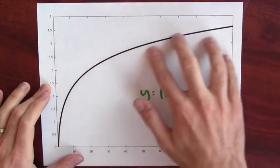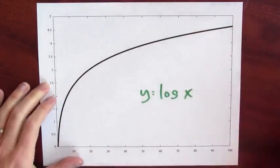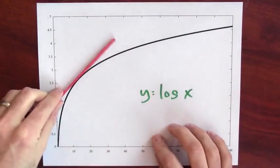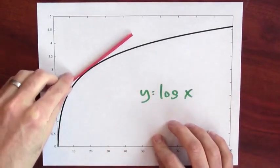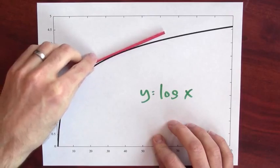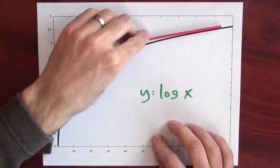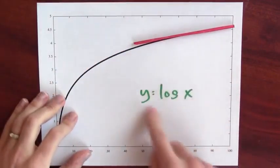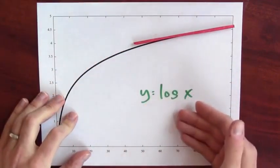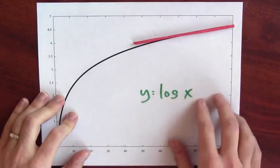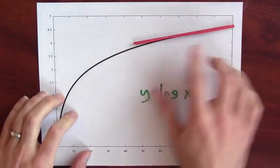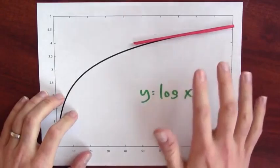But you can see from this graph the important qualitative feature: that the graph is getting less and less slopey. It's flattening out as the input gets bigger. If I put down a tangent line and start moving the point that I'm taking the tangent line at to the right, you can see the tangent line slope is getting closer and closer to 0. And of course, that's reflected by knowing the derivative of log x is 1 over x. So if x is really big, the tangent line at x is really close to 0 in slope.